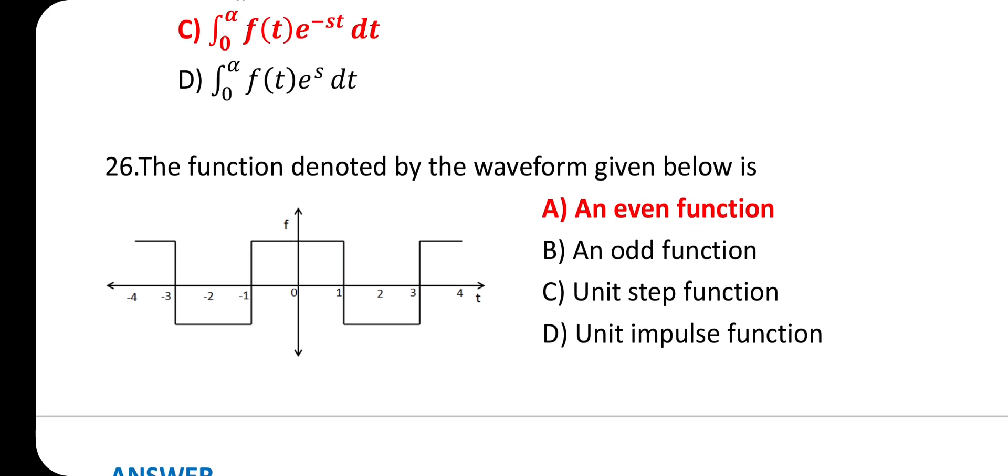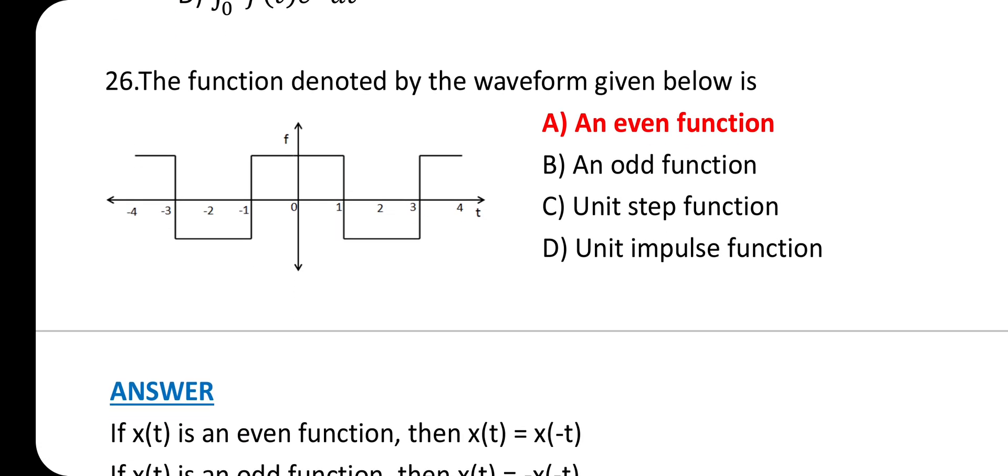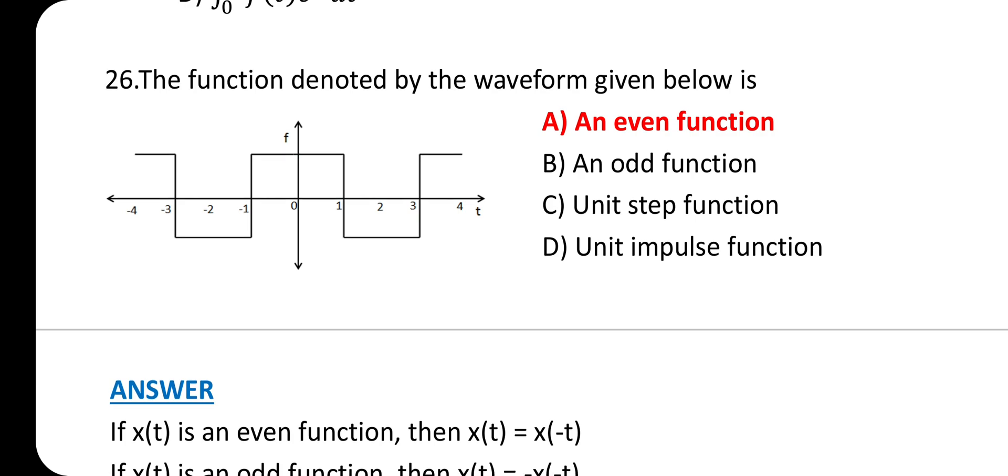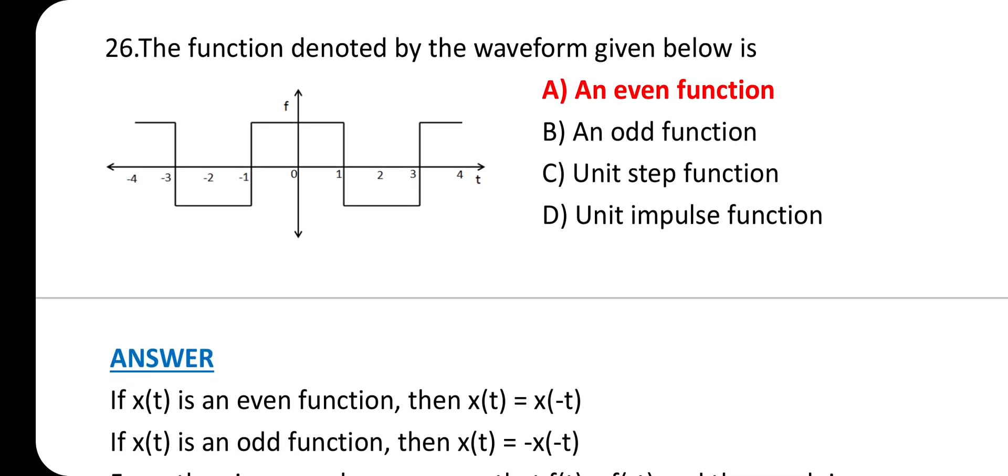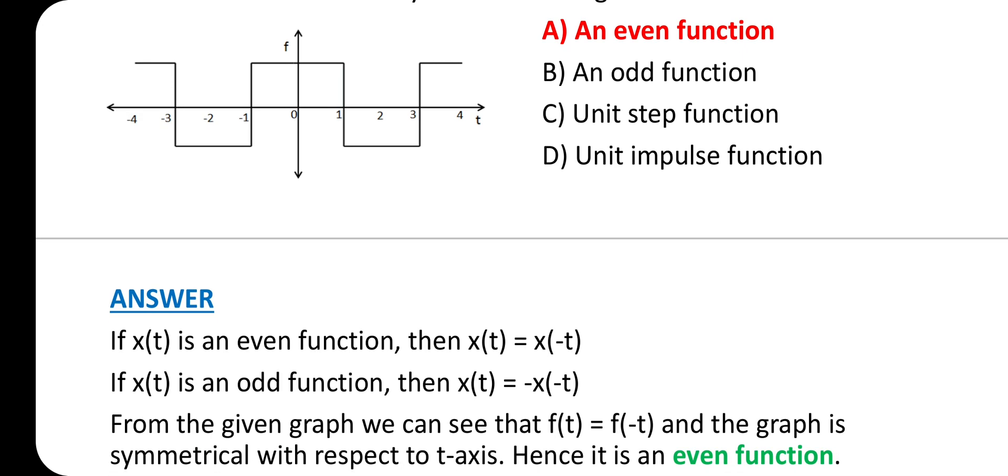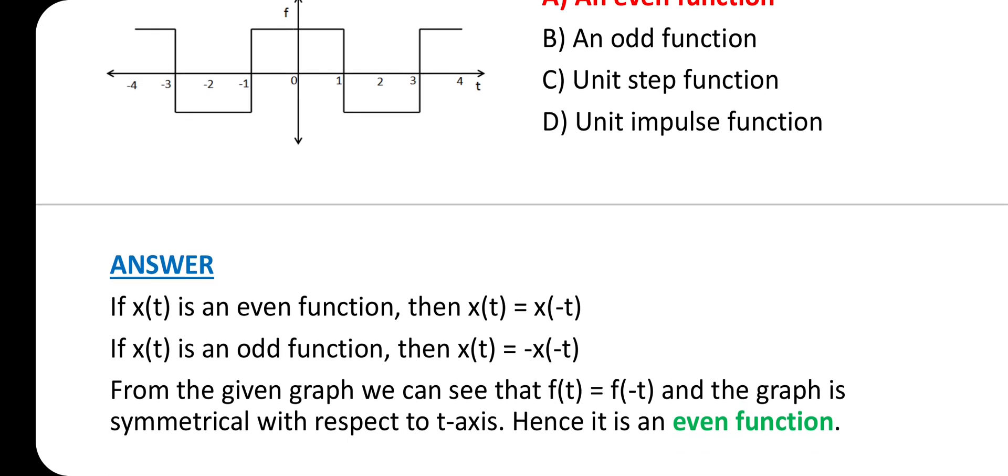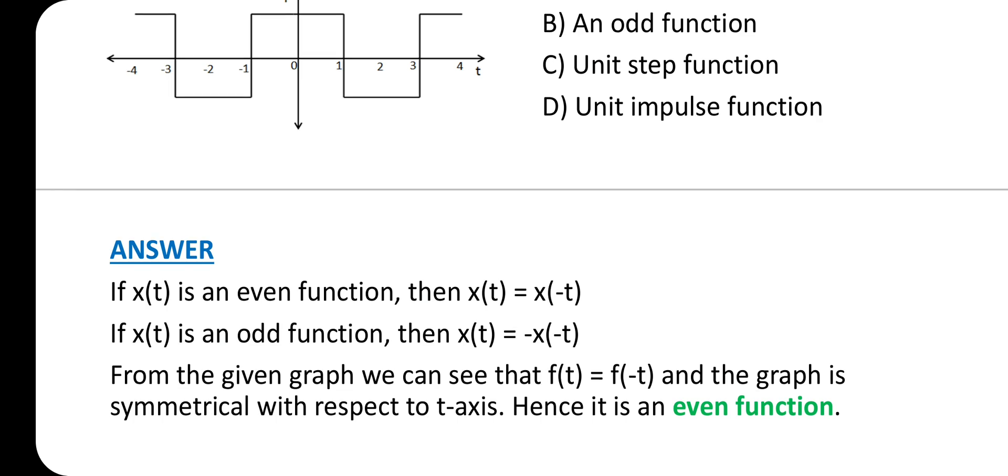The function denoted by the waveform given below is an even function. Option A is the correct answer. If x(t) is an even function, then x(t) = x(-t). From the given graph, f(t) = f(-t) and the graph is symmetrical with respect to the t-axis, hence it is an even function.